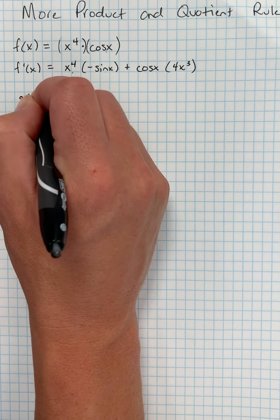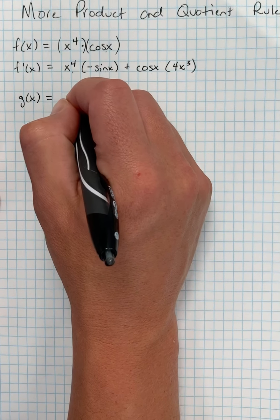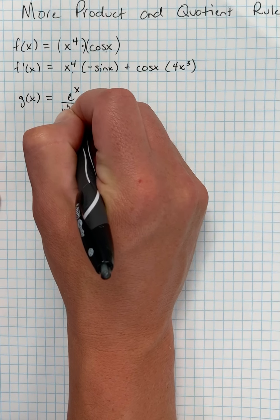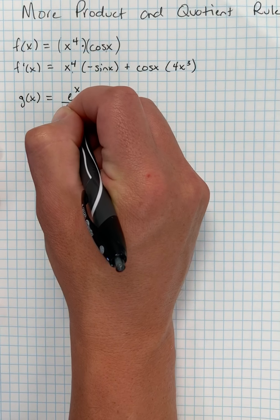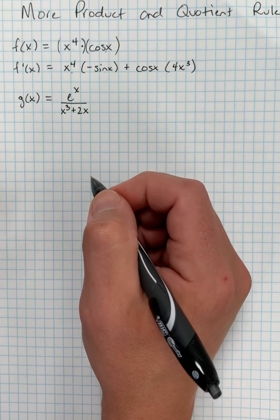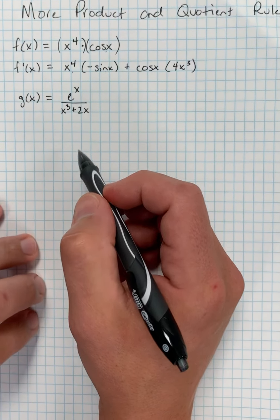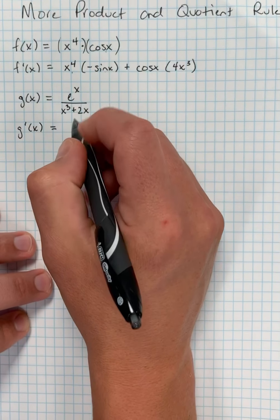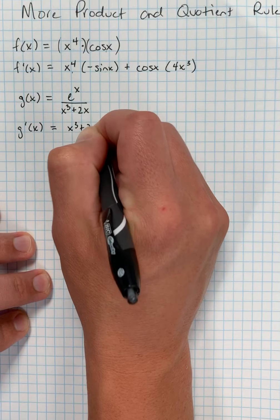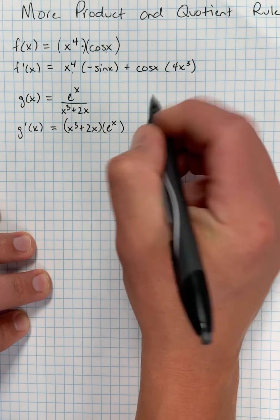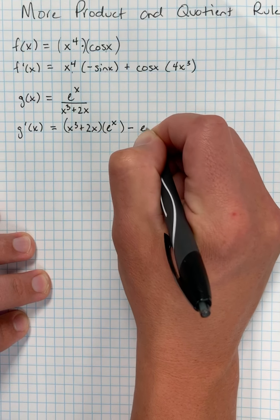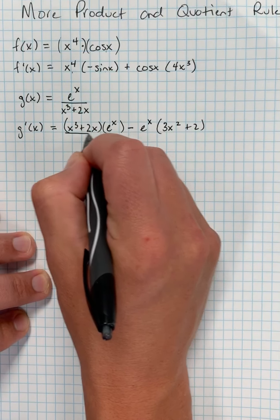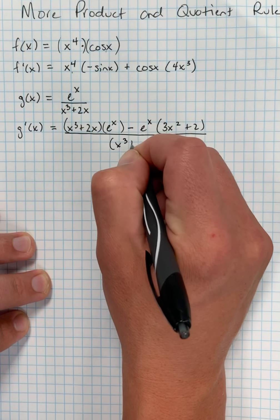Let's go ahead and look at g(x). If g(x) equals e to the x over x cubed plus 2x. I see I have one term divided by another binomial here, so I'm going to use the quotient rule. So g'(x) equals low d high, which is e to the x, low d high minus high, which is just e to the x, d low, 3x squared plus 2, over the square of what's below.